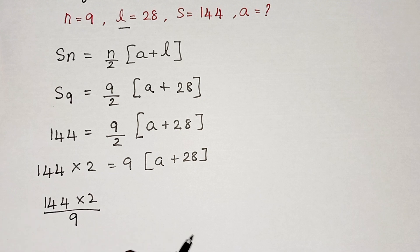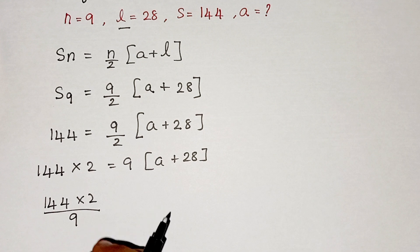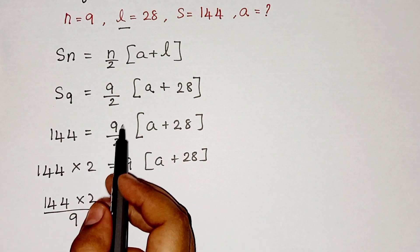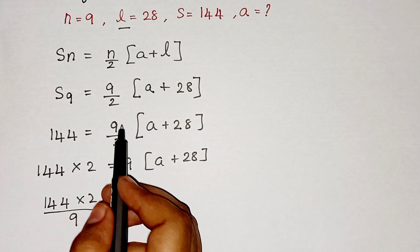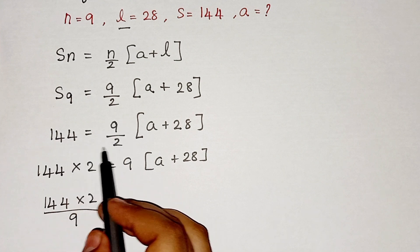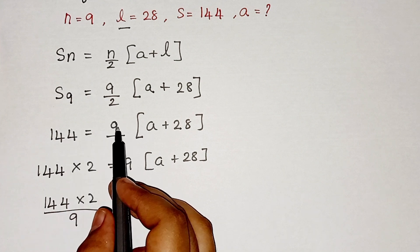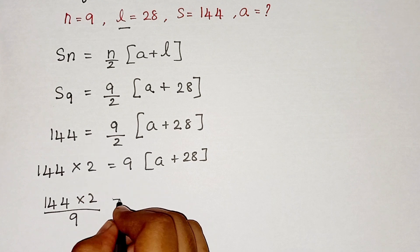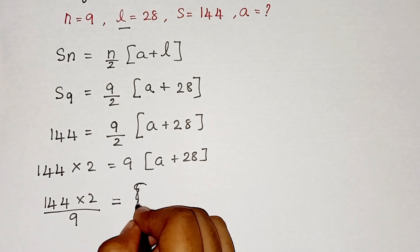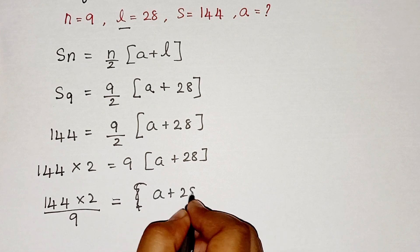Why? Because here it is multiplication. Since we have bracket, here it is in multiplication. So when it comes to this side, it changes into division. When we get this complete term to this side, the 2 will go right over here and then 9 will come down. You can identify it like that and you can write a + 28 as it is.